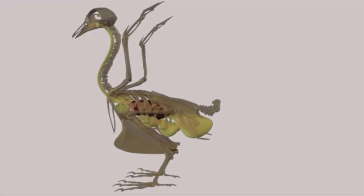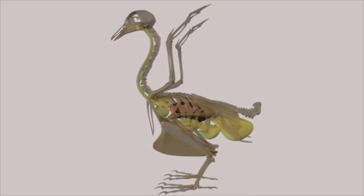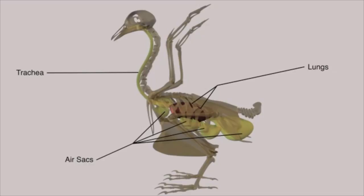The avian respiratory system is composed of the trachea, relatively small lungs, and usually nine large air sacs.